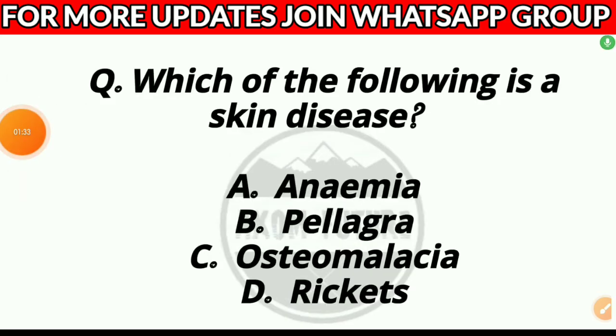Question 6. Which of the following is a skin disease? Option A, anemia; Option B, pellagra; Option C, osteomalacia; or Option D, rickets. Answer: Option B, pellagra.